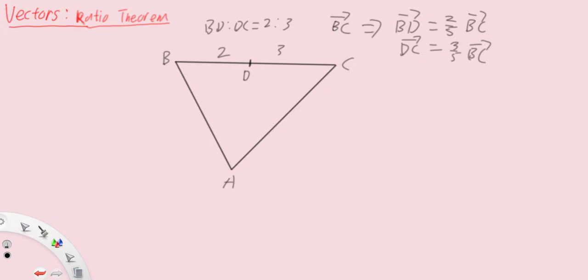We can therefore find vector AD by adding AB and AC. That's if we were given BC right, we can find vector BD if we are given vector BC.